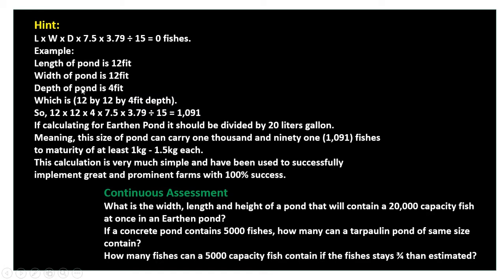When you calculate with 4 feet depth, that means the original depth of the pond should be 5 feet. You shouldn't fill the pond to the brim, so you calculate with 4 feet of water. That gives us 12 × 12 × 4 × 7.5 × 3.79 ÷ 15 liters.